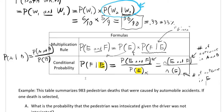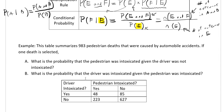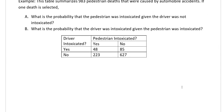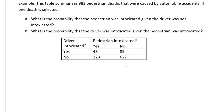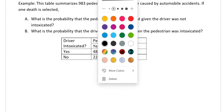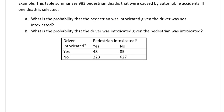This table summarizes the 983 pedestrian deaths caused by automobile accidents, so 983 is our total sample space. If one death is selected, what is the probability that the pedestrian was intoxicated given the driver was not intoxicated? We have a two-way table with pedestrian intoxicated yes or no versus driver intoxicated yes or no. The values are: both intoxicated = 43, pedestrian not but driver was = 85, pedestrian yes but driver not = 223, and neither = 627.